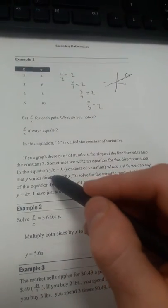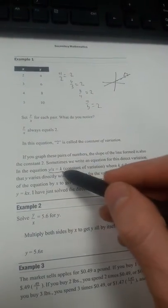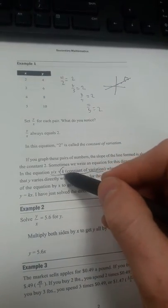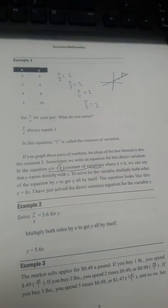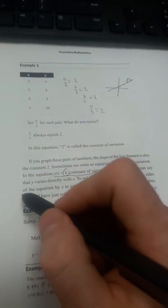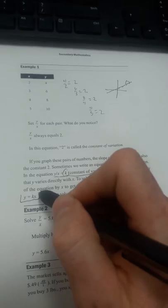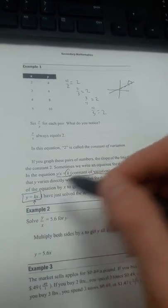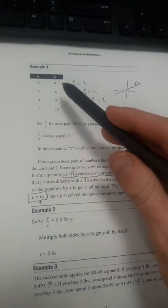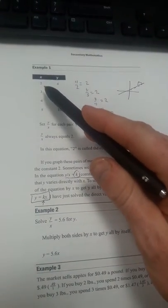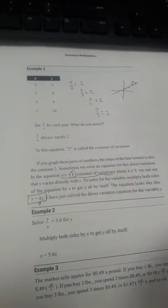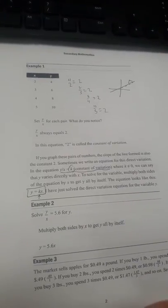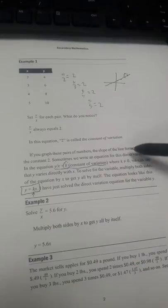In this equation, y over x equals k is the constant of variation. The k is what goes in front of the x in an equation. As you can see right here, y equals kx. And so to find out what that number is that goes in front of the x, we have to take the y and divide it by the x.